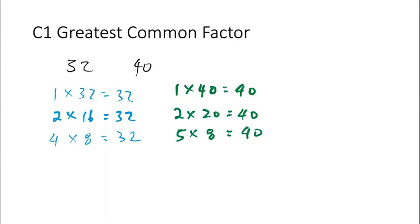So now we can circle out or highlight out the common factors. 1 and 1. So 1 and 1, 2 and 2, 8 and 8.